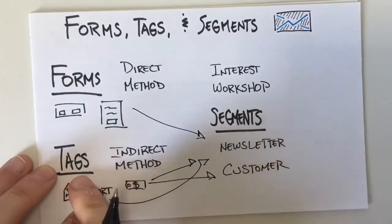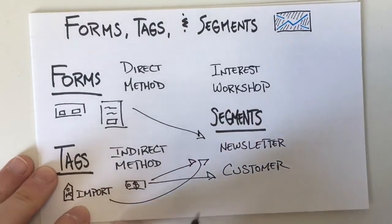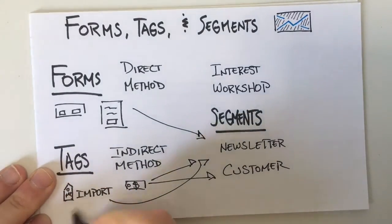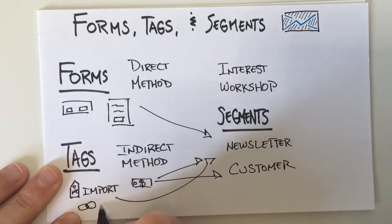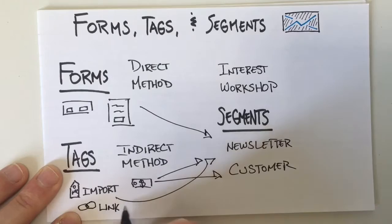Another thing that could be an indirect method of tagging is thinking about our link triggers as well. So it's still a way that they know they're being added, but it's not quite as direct as joining a form.